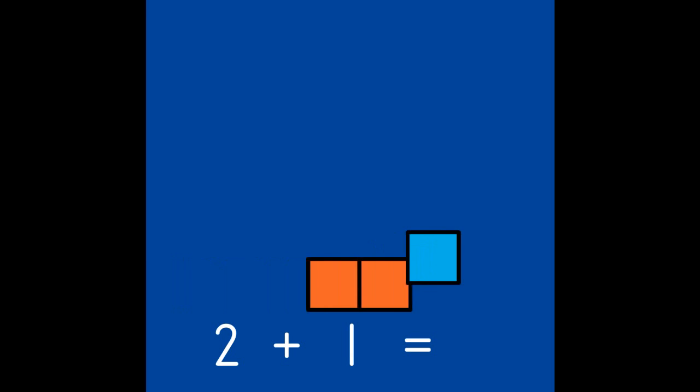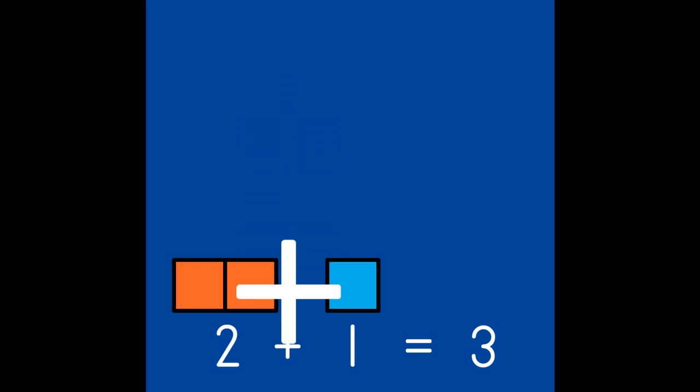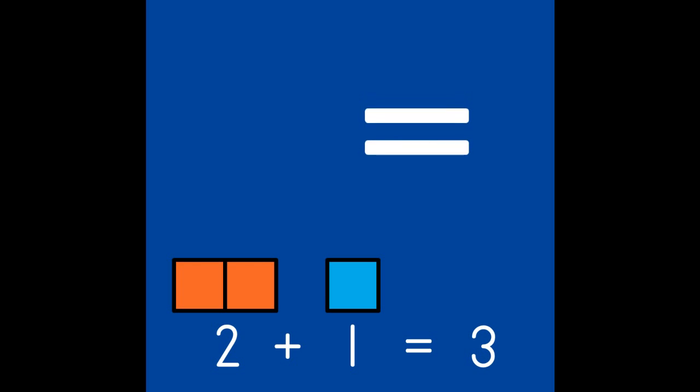When we combine numbers, we write a number sentence that looks like this: 2 and 1 are the same as 3. Here are two sticks. We put the sticks together to make the sign that we use in our number sentence to show we are putting the partners together. We use them for the sign to show that our partners together are the same as the new number they make.